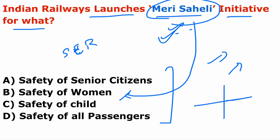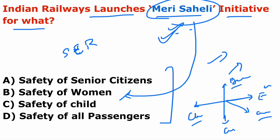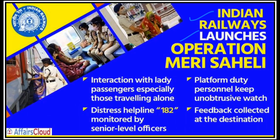Remember, it is South Eastern Railway — not Eastern Railway. Eastern Railway is Kolkata, South Eastern Railway zone is also Kolkata. Southern Railway is Chennai, Western Railway is Churchgate Mumbai, Northern Railway is Delhi. The helpline number is 182, and senior-level officers remain in touch with women passengers throughout the journey.